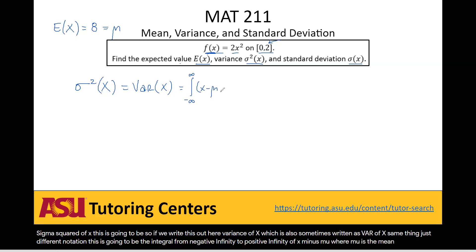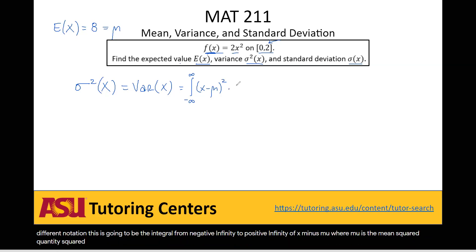where mu is the mean, squared, quantity squared, times our f(x), our probability density function, dx. Now remember we said that mu here is equal to the expected value of x. So we can substitute that in.